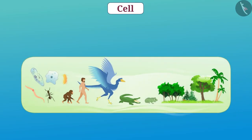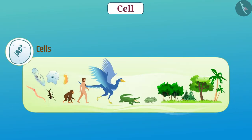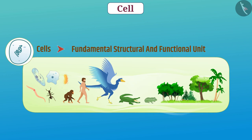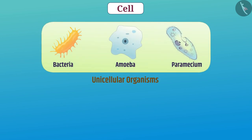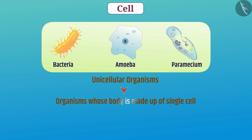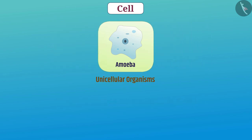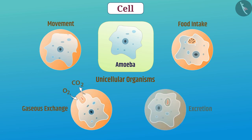All living beings are made up of cells. The cell is a fundamental, structural and functional unit of life. In different organisms, there are different numbers of cells. In some organisms, one cell is itself the entire organism. Organisms whose body is made up of a single cell are called unicellular organisms. In such organisms, the single cell carries out all fundamental functions like movement, food intake, gaseous exchange and excretion.